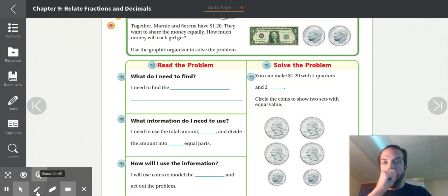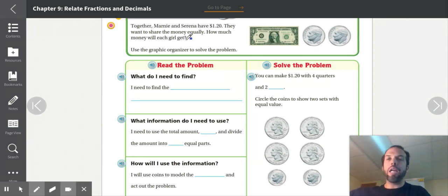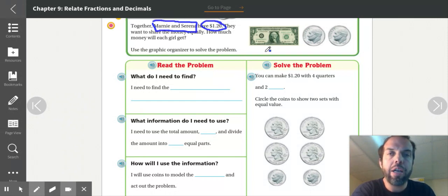So it says, together, Marnie and Serena have $1.20. They want to share the money equally. How much money will each girl get? Use this graphic organizer here to help us solve the problem. So for today's lesson, it's going to take some diagramming and writing some stuff down. So it says that there's two girls, Marnie and Serena. They have $1.20, which is right here. Here's $1 and two dimes. So $1, 10, 20, $1.20.